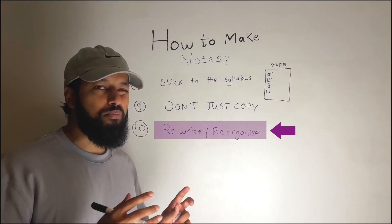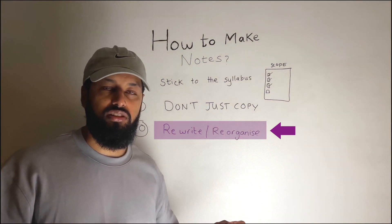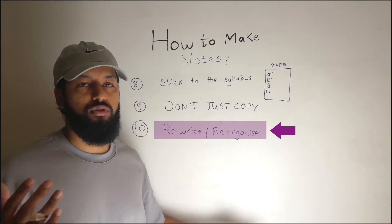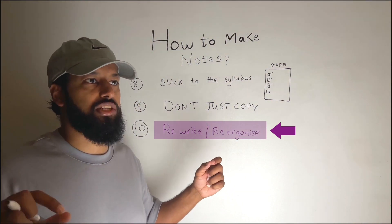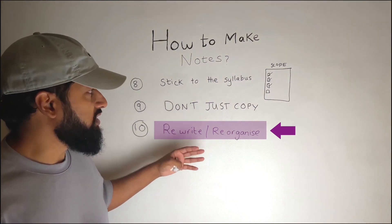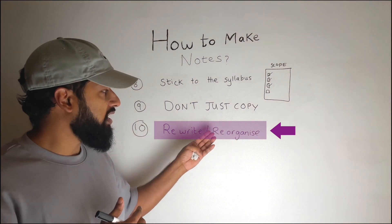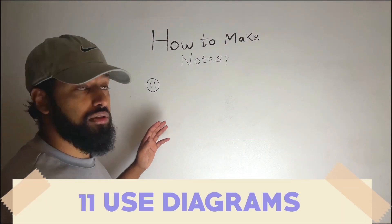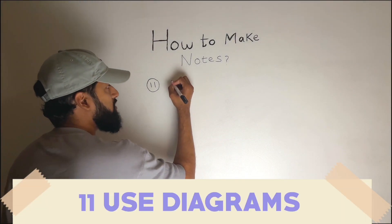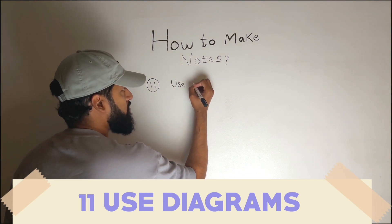Now sometimes you may need to copy it out because it's a definition. Okay, so enthalpy of formation in chemistry for example, it's a definition you need to know it. But if it's like a process or you're understanding something, then you really need to try to rewrite and reorganize this and the best way you can do that is by use of diagrams. So use diagrams.